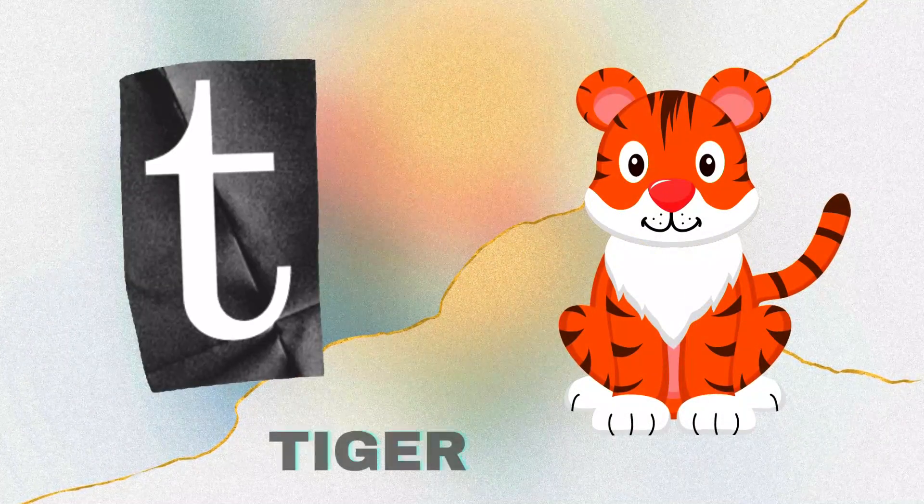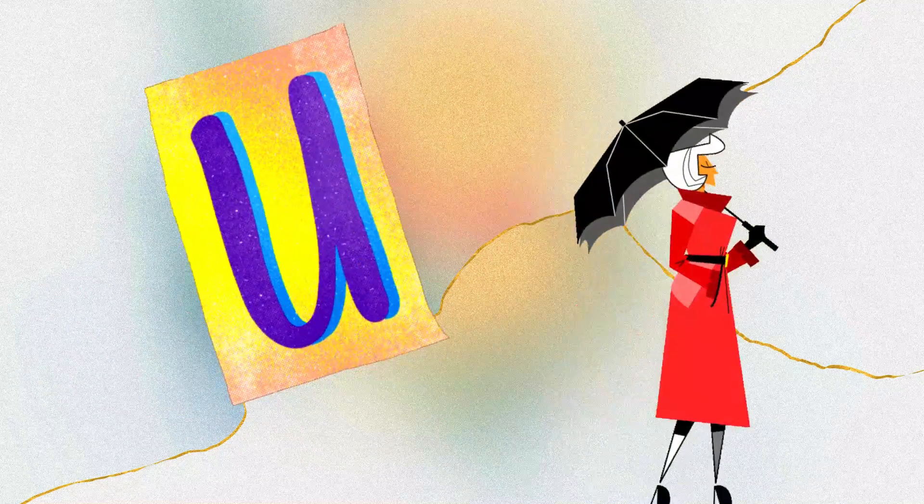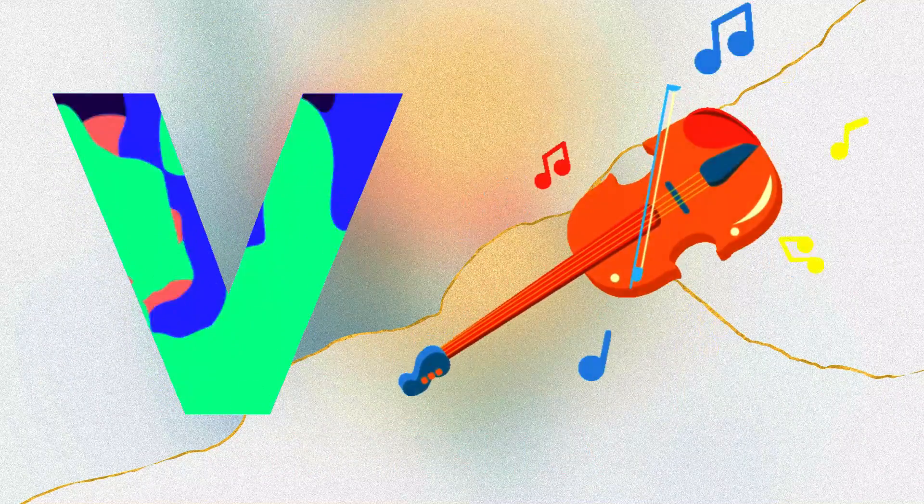T is for tiger, t-t-tiger. U is for umbrella. V is for violin.